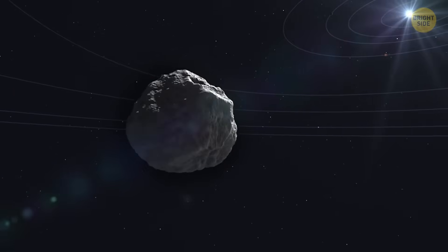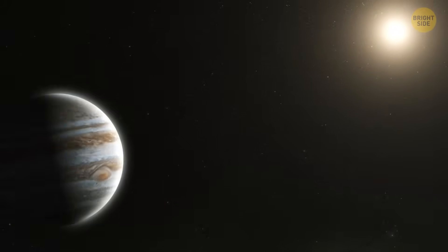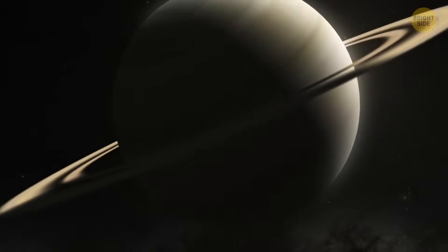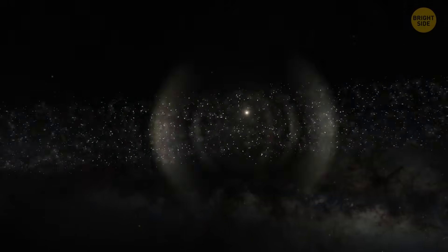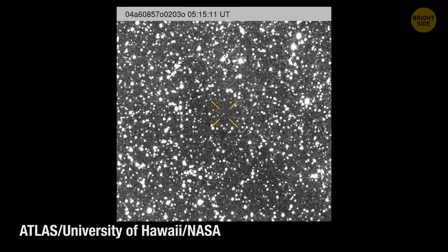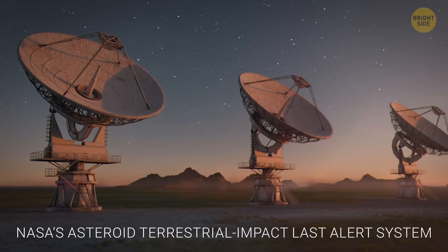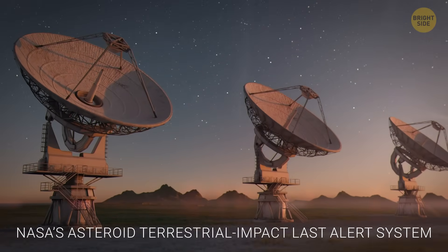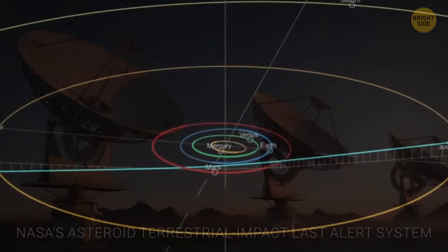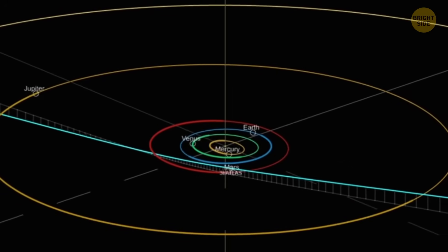But even all that size isn't the wildest part. Some experts think this object might be a piece of unknown technology from outside our galaxy. And they're not saying this just for fun. There are real reasons behind the theory. 3I Atlas was first noticed in July by NASA's Asteroid Terrestrial Impact Last Alert System, or ATLAS.